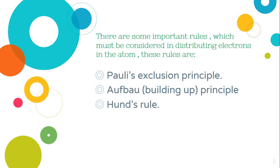There are some important rules which must be considered in distributing the electrons in the atom. These rules are Pauli's Exclusion Principle or Building Up Principle, and Hund's Rule.